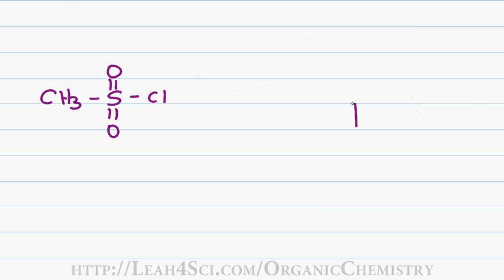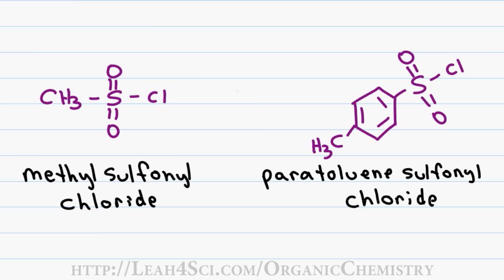There are many large molecules that you can use to turn oxygen into a good leaving group. Two common ones that you'll see in your substitution and elimination reactions include methyl sulfonyl chloride and paratoluene sulfonyl chloride. If you're worried about these molecules being a mouthful, don't.